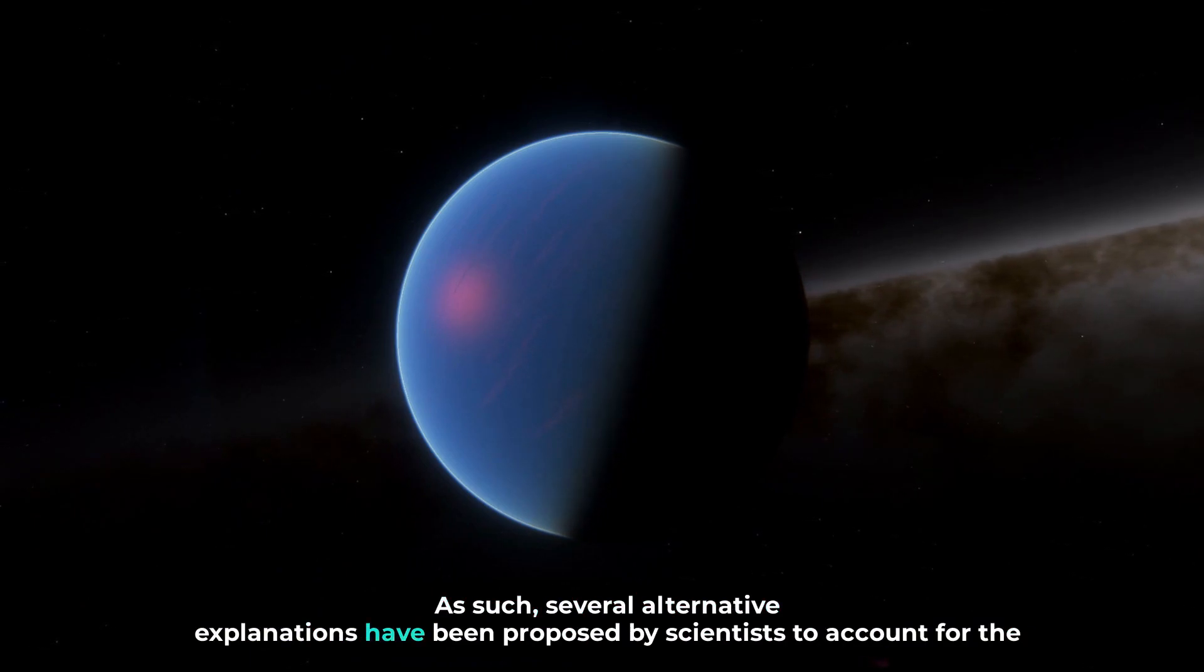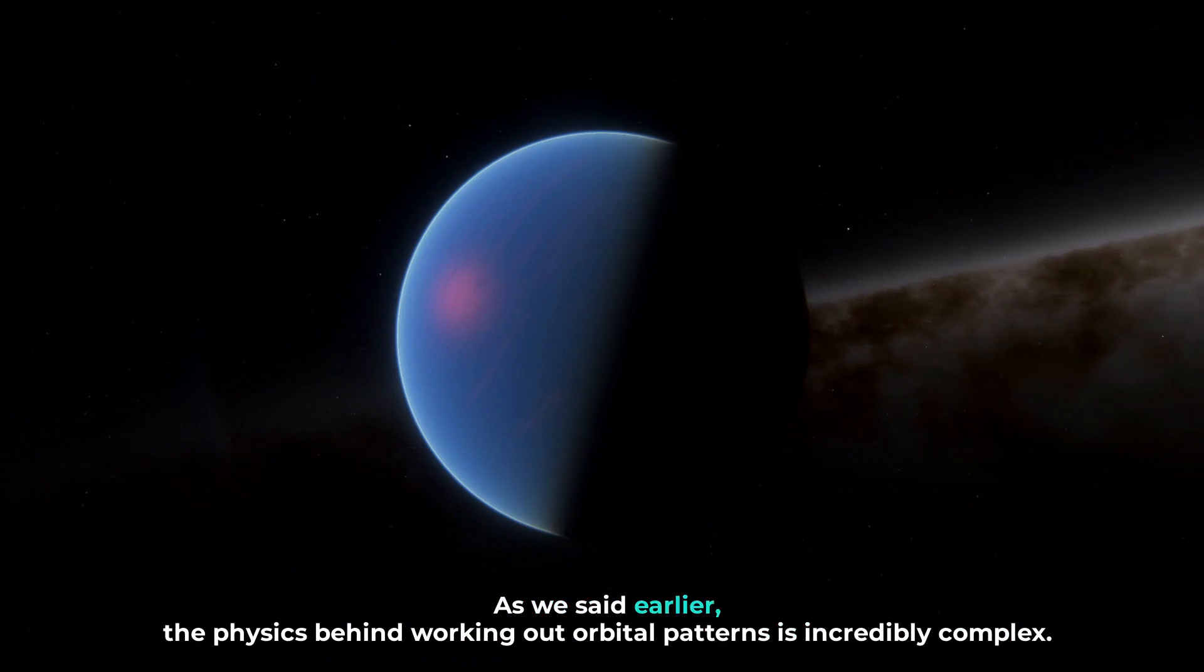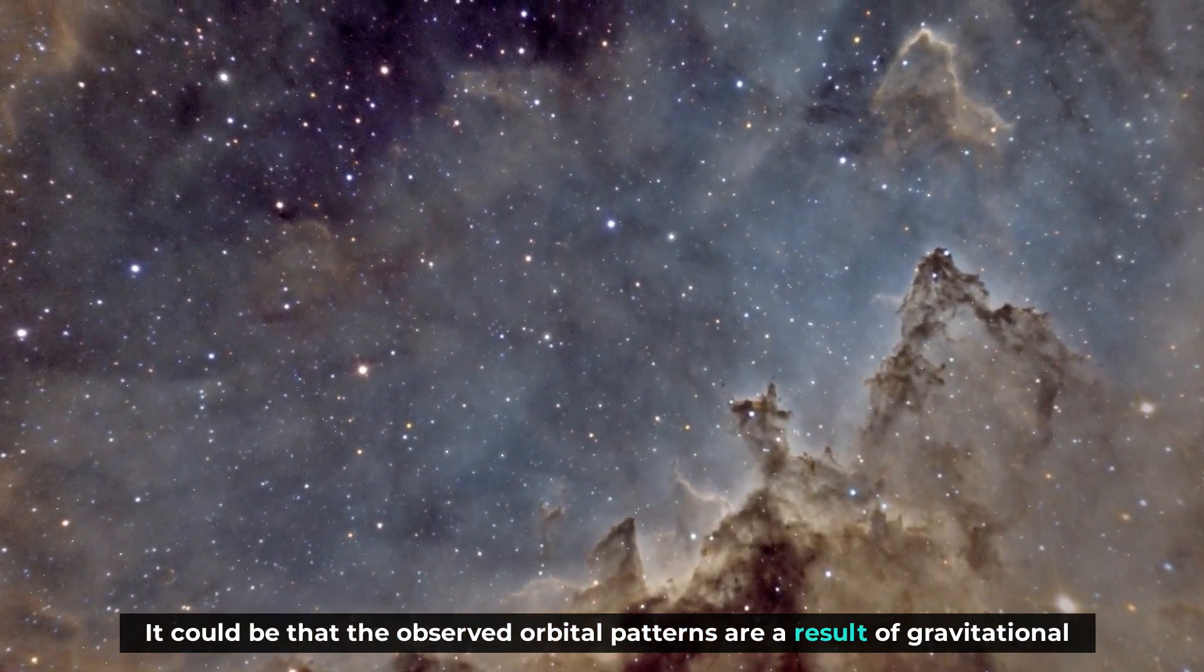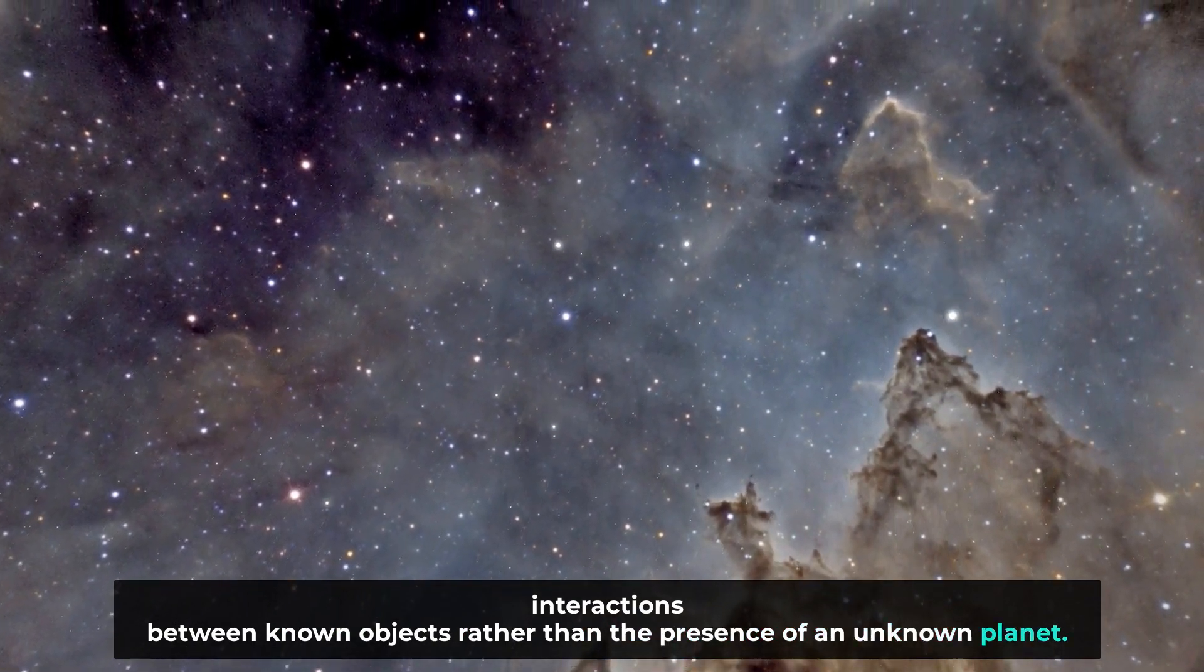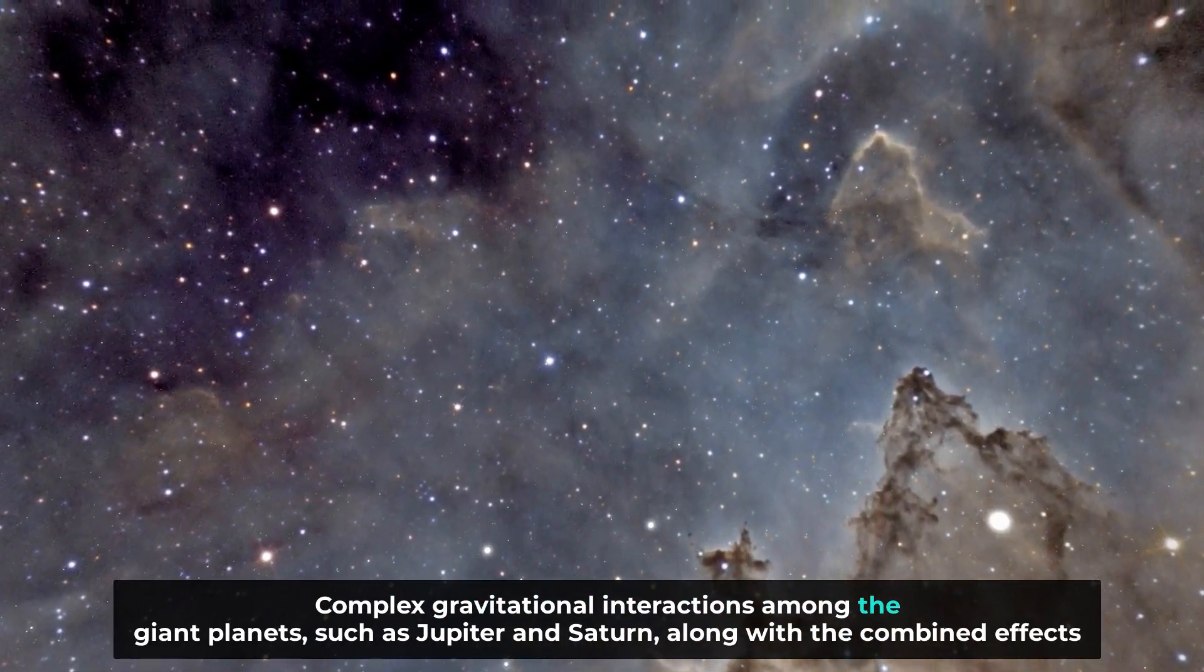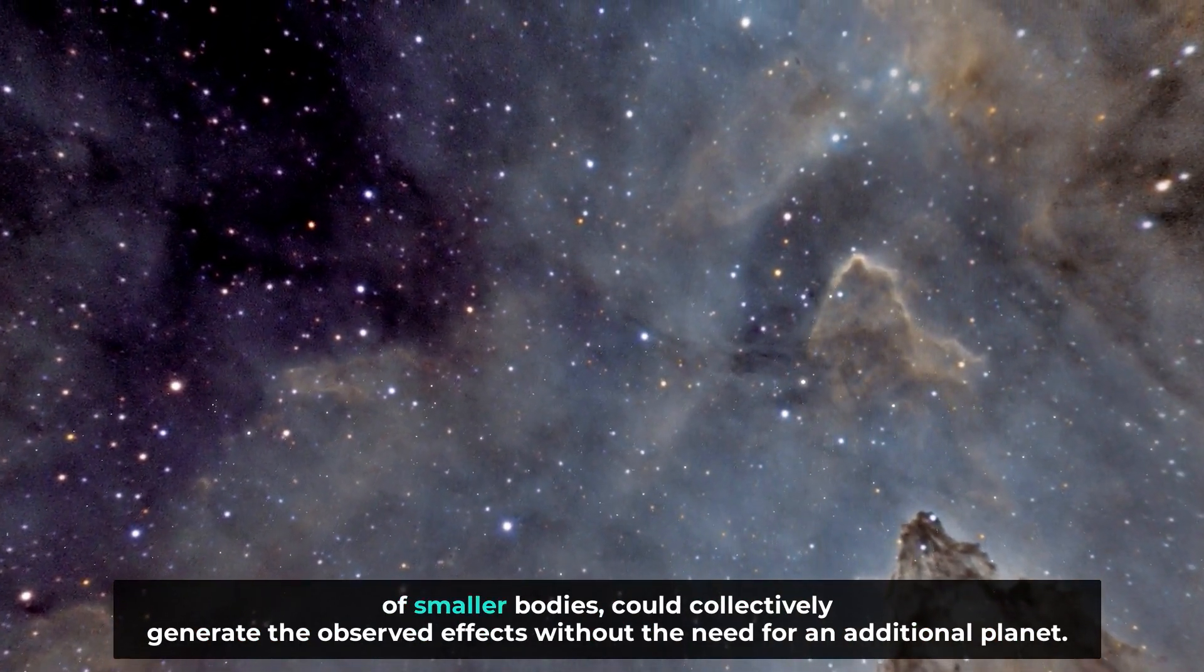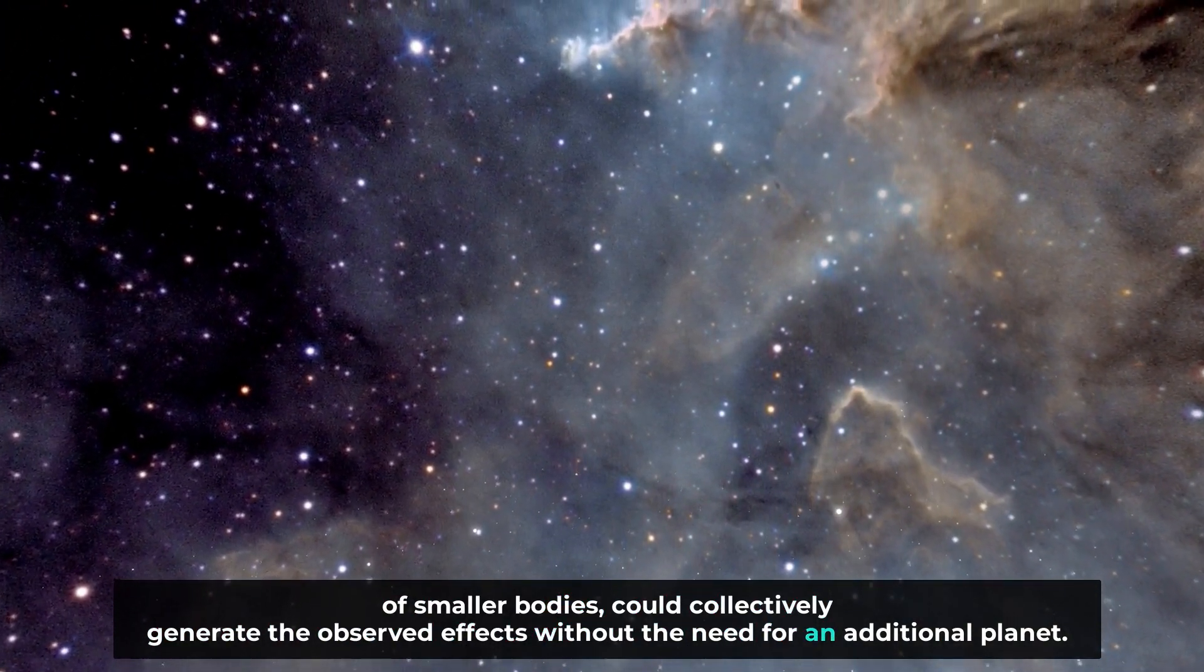As such, several alternative explanations have been proposed by scientists to account for the orbital anomalies and clustering of objects in the outer regions of our solar system. As we said earlier, the physics behind working out orbital patterns is incredibly complex. It could be that the observed orbital patterns are a result of gravitational interactions between known objects rather than the presence of an unknown planet. Complex gravitational interactions among the giant planets, such as Jupiter and Saturn, along with the combined effects of smaller bodies, could collectively generate the observed effects without the need for an additional planet.